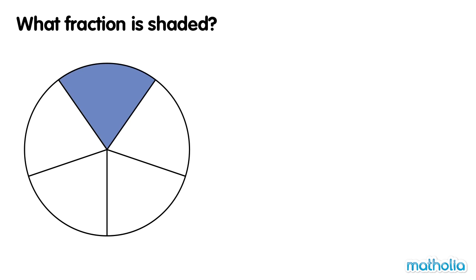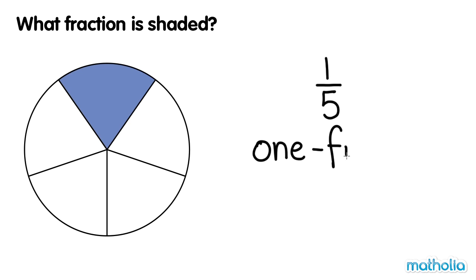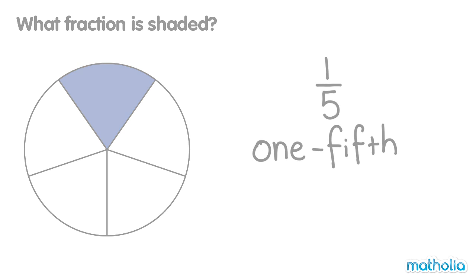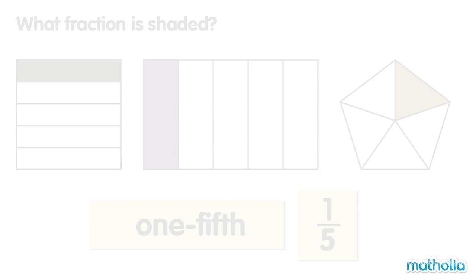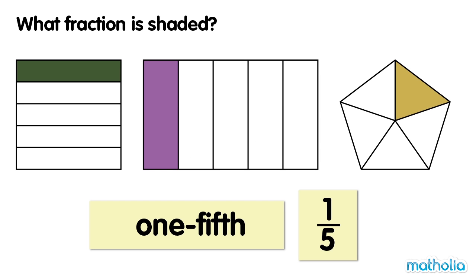What fraction is shaded? The circle is divided into five equal parts. One part is shaded. One fifth of the circle is shaded. One fifth. One fifth of these shapes are shaded.